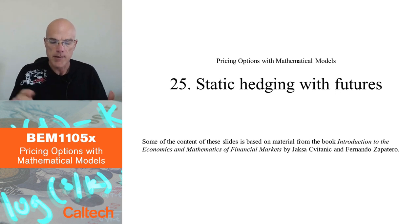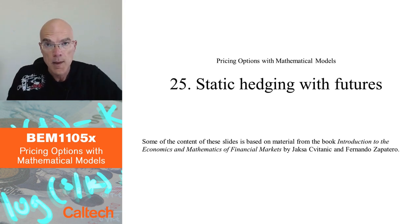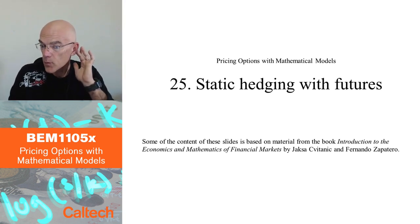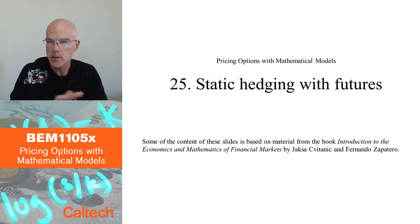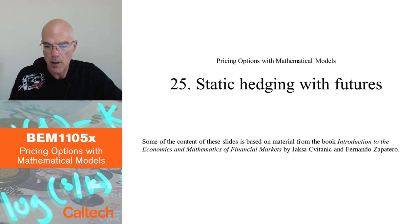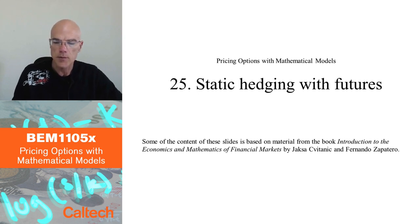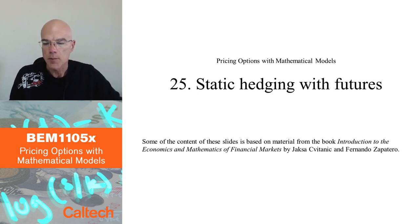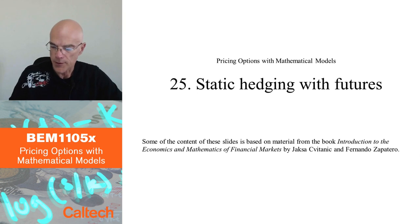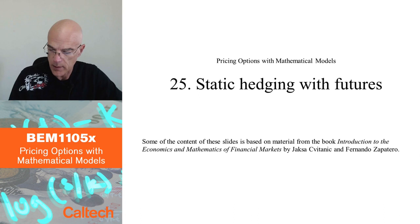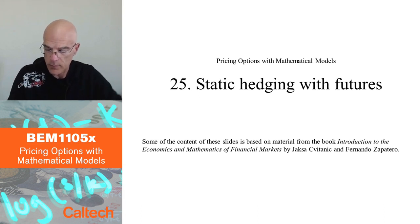The first thing we are going to talk about is static hedging, meaning there is some payoff that you want to hedge in the future. But the way you do it, you just take some positions at time zero — once, static — and then you don't do anything until maturity. Futures are particularly convenient for that because futures markets are liquid, the bid-ask spreads are narrow, so people use futures a lot for hedging. This is going to be mathematically easier; there is not going to be any Brownian motion because we are doing a static model.